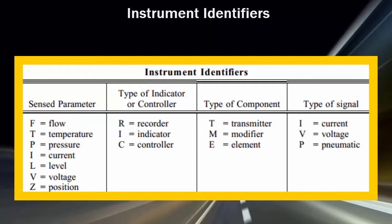The symbols used to represent instruments and their loops can be divided into four categories. Generally, each of these four categories uses the component identifying or labeling scheme as shown here. The first column lists the letters used to identify the parameter being sensed or monitored by the loop or instrument.